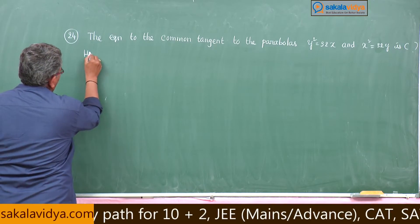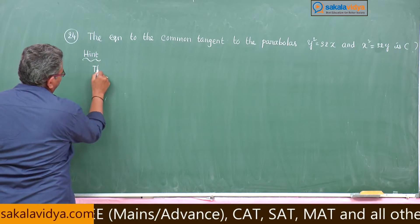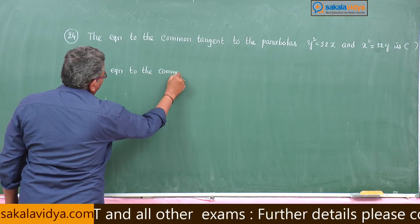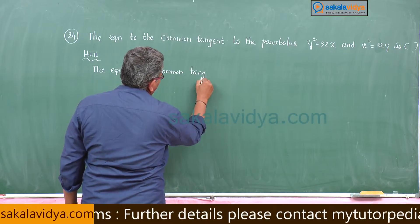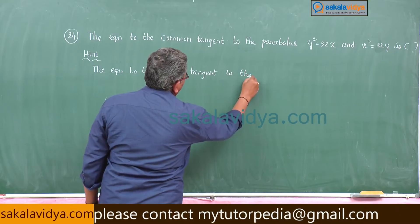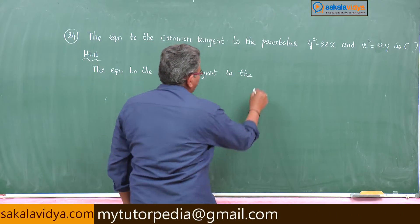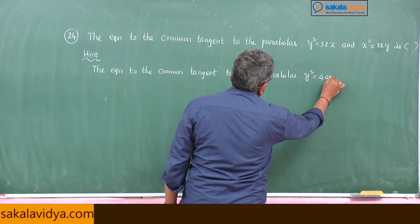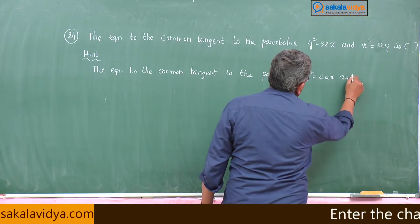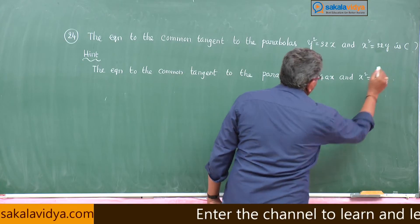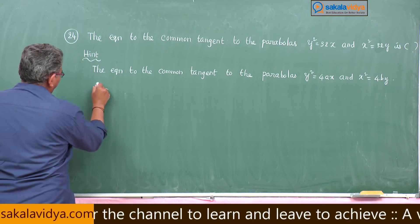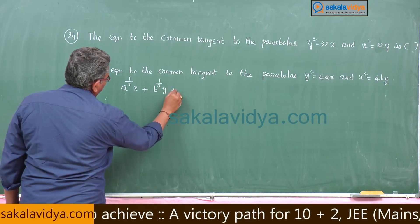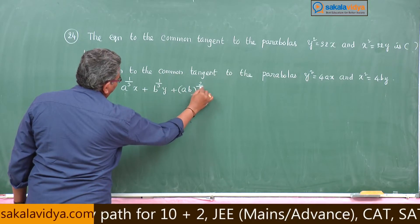Remember this shortcut: the equation to the common tangent to the parabolas y² = 4ax and x² = 4by is: a^(1/3) · x + b^(1/3) · y + (ab)^(2/3) = 0.